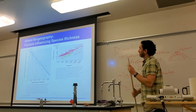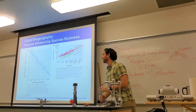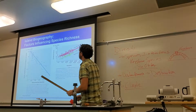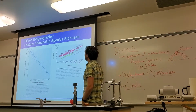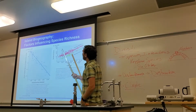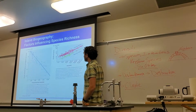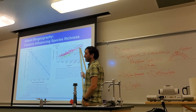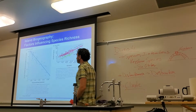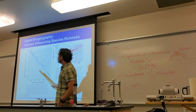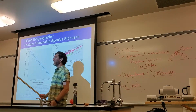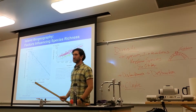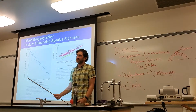Island biogeography — this is kind of a straightforward explanation. There's this thing called island biogeography that says the bigger the land mass, the more species, and the closer the land mass is to another big land mass, the more species there are.